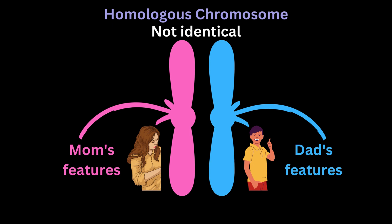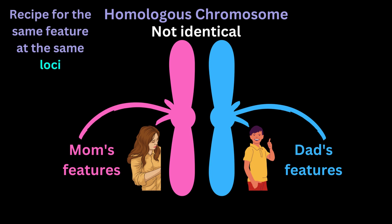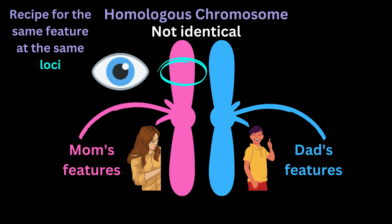So what is the speciality of homologous chromosomes? Homologous chromosomes have the recipe for one particular part of the body at the same loci. If we look at the maternal chromosome at a specific part — let's say this part is coding for eye color — and we look at the paternal chromosome at the exact same part, the paternal chromosome is also going to code for eye color.